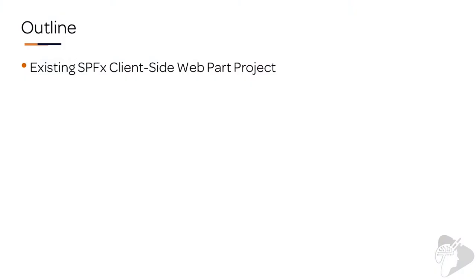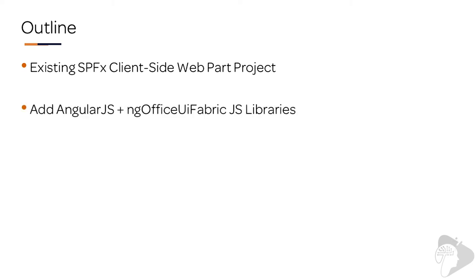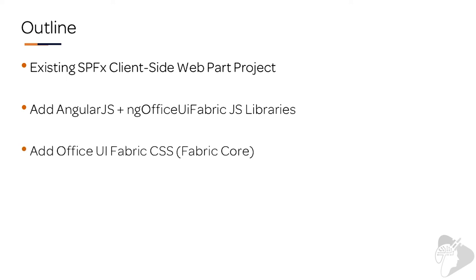I'll start by taking an existing SharePoint Framework client-side web part project and changing it to display a pre-built AngularJS web application. This Angular application leverages a few external libraries, such as the AngularJS library — which is Angular 1 — and the community-supported ng-office-ui-fabric library. This latter library, which happens to be one that I'm involved in, is a collection of Angular directives that implement the Office UI Fabric controls. As such, it also requires the Office UI Fabric Core CSS files.